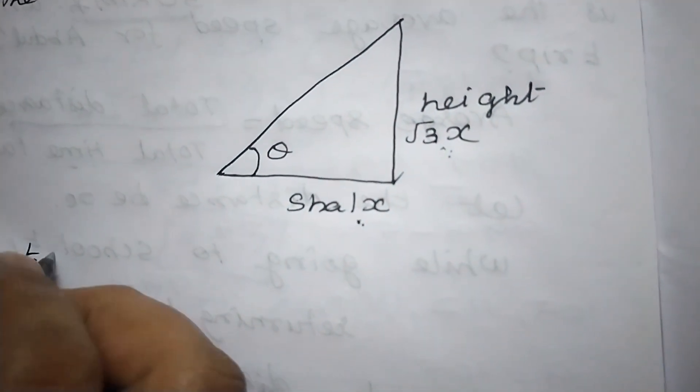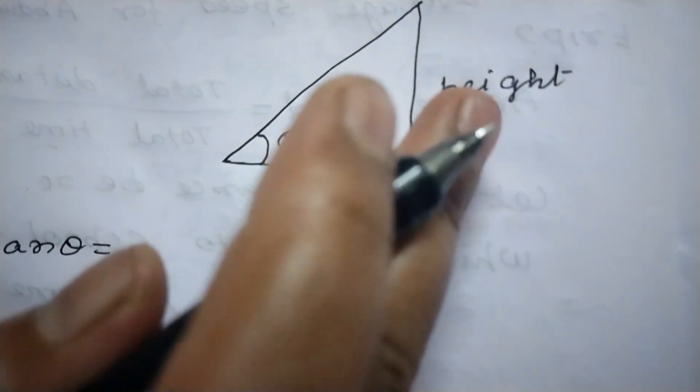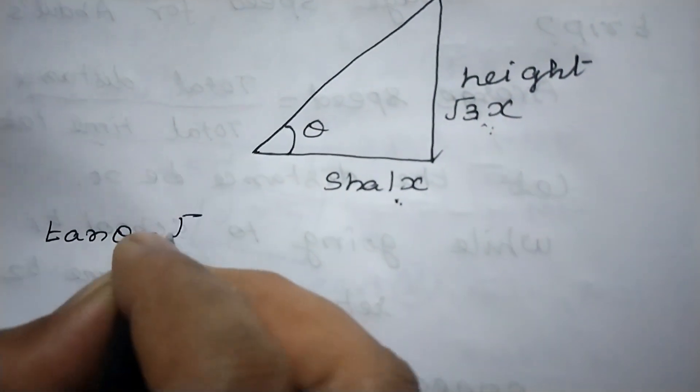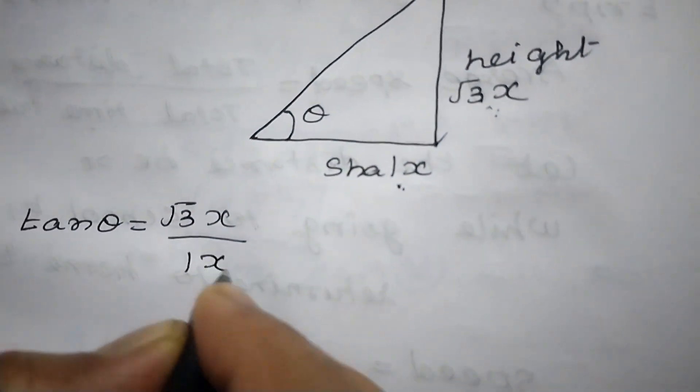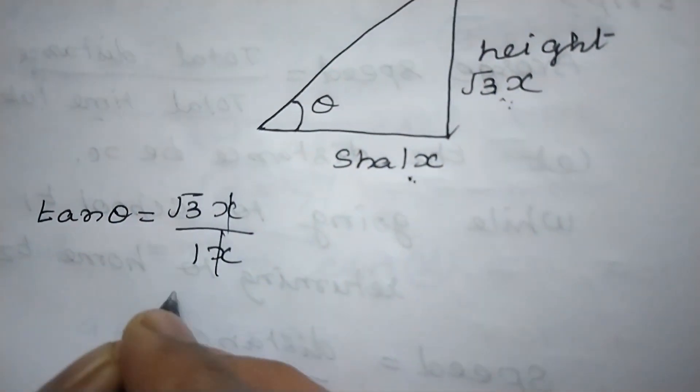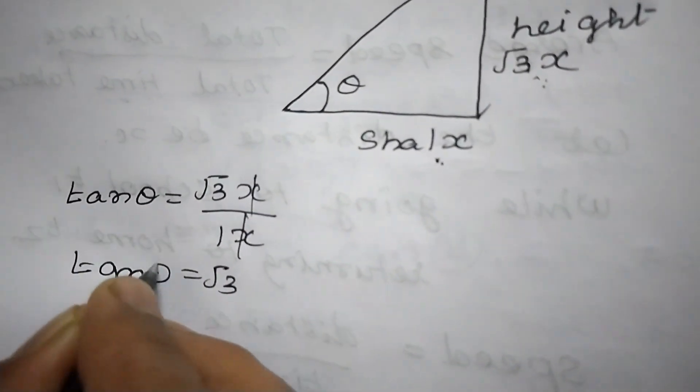Tan theta equal to, we know that tan theta equal to opposite side by adjacent side. So opposite side is √3x. So √3x divided by shadow is 1x. Adjacent side it is 1x. So now x, x get cancelled. So √3. So tan theta equal to √3.